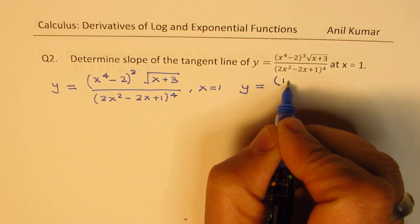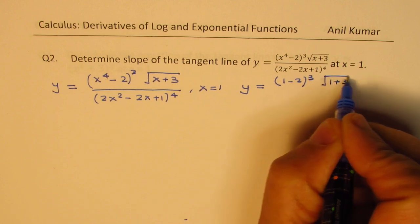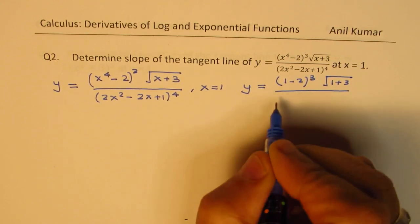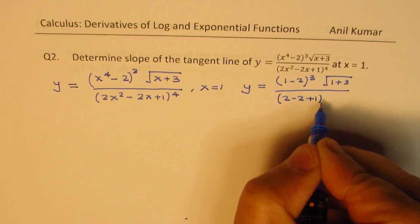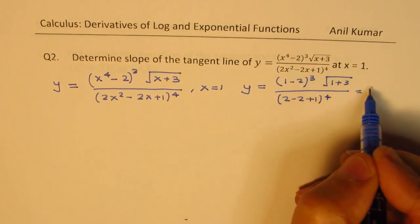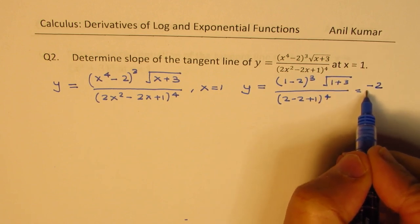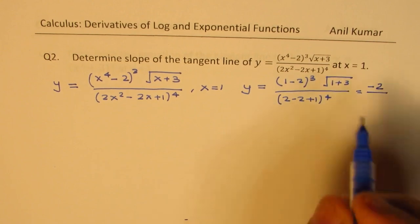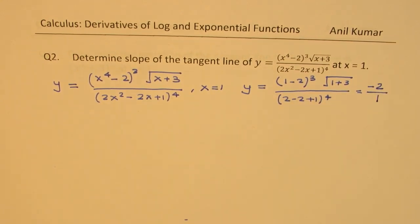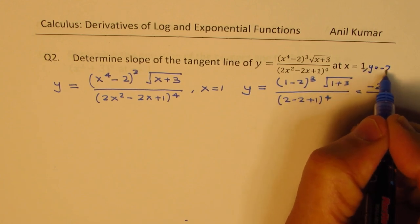So y equals (1 minus 2) cubed times square root of (1 plus 3), over (2 minus 2 plus 1) to the power of 4. That gives minus 1 cubed, and square root of 4 is 2, so we get minus 2 in the numerator. The denominator is 2 minus 2 plus 1 to the power of 4, which equals 1. So the y value is minus 2. We now know that y is minus 2 when x equals 1.